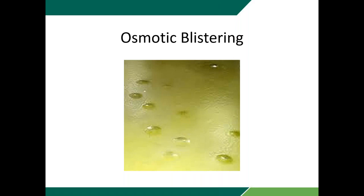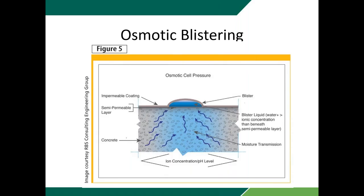When we put down impermeable coatings such as epoxies and urethanes, it's not uncommon — if we've got moisture coming up out of the concrete — to get blistering. This blistering is typically osmotic blistering, in which an osmotic cell gets created beneath the coating at the concrete interface and builds up a great degree of pressure. It's been tested to show that osmotic blistering can generate pressures of upwards of 300 to 400 psi — far exceeding the bond capacity of most epoxies and urethane coatings.